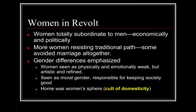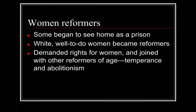Women were totally subordinate to men both economically and politically. More women were resisting the traditional path of being a wife and mother, with some avoiding marriage altogether. Gender differences were emphasized: women were seen as physically and emotionally weak but artistic and refined, and were viewed as the moral gender responsible for keeping society good. Home was considered the women's sphere — known as the cult of domesticity. Some began to see the home as a prison, and white well-to-do women became reformers, demanding rights and joining movements like temperance and abolitionism.